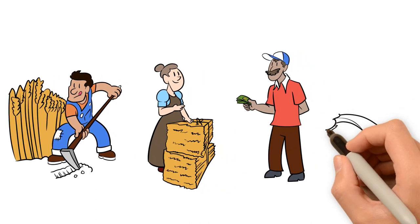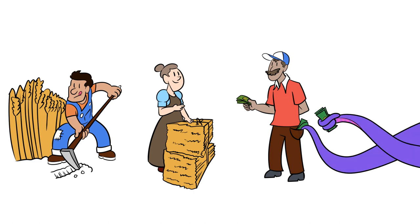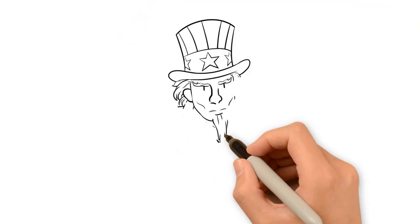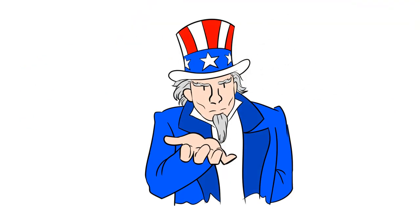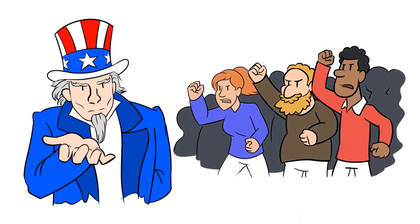Governments need only find some method of expropriating more goods without the owner's consent. One way is theft, which in a monetary economy is called taxation. But taxes are unpopular,